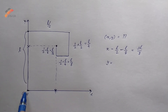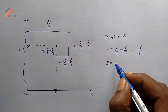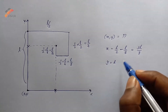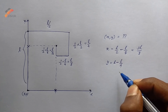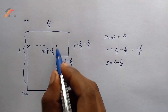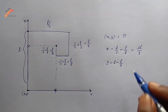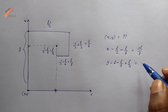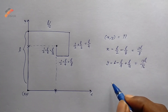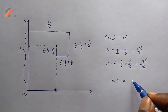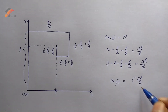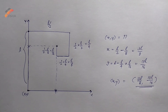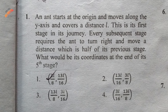For the y-coordinate: the distance travelled at the first stage is L, then back that is minus L/4, and then forward again along the y-axis that is plus L/16. So y = L - L/4 + L/16 = 13L/16. Therefore the (x, y) coordinate is (3L/8, 13L/16). This is the right answer and option one is the correct answer.